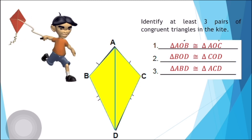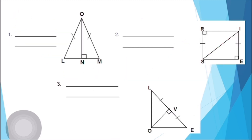Now let's proceed to our next activity. In each figure, congruent parts are marked. Give the additional congruent parts to prove that the right triangles are congruent and state the congruence theorem. I will give you one minute to answer the following figures.